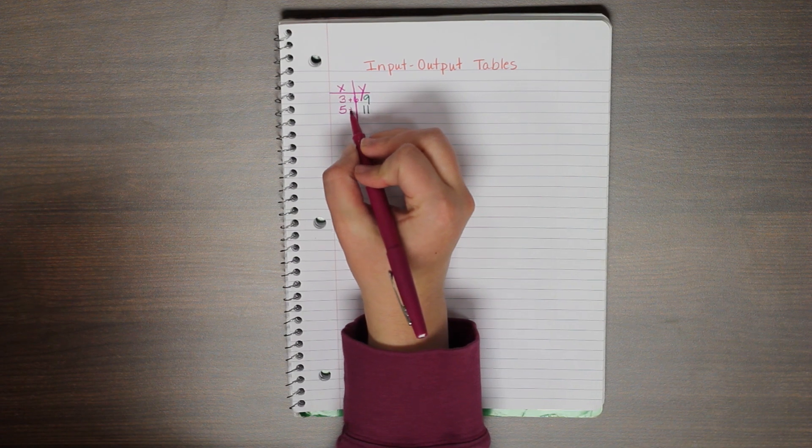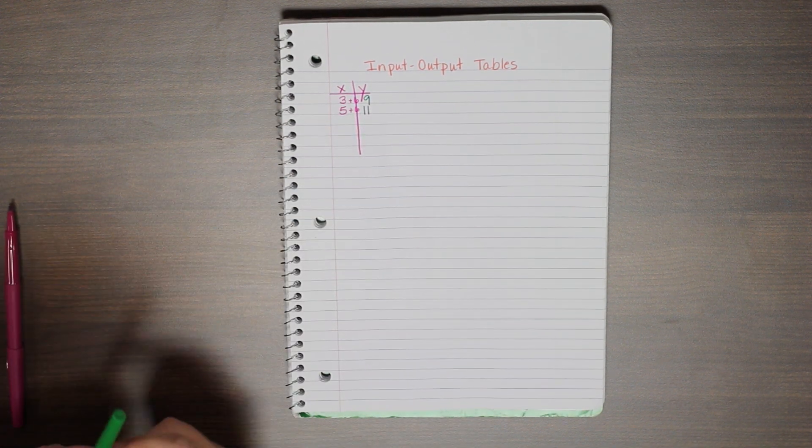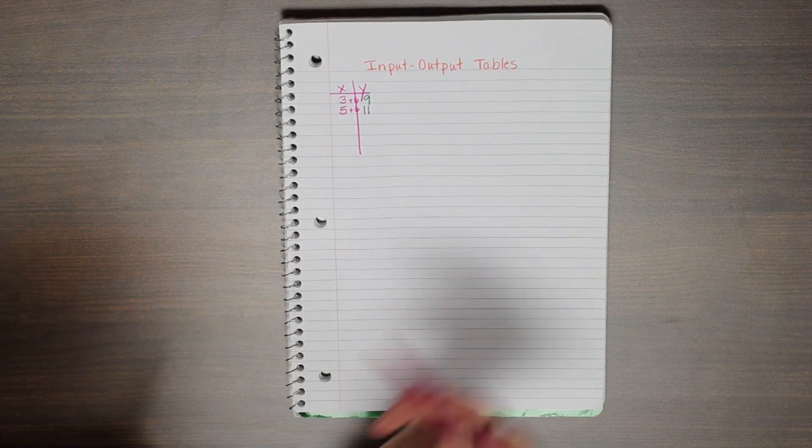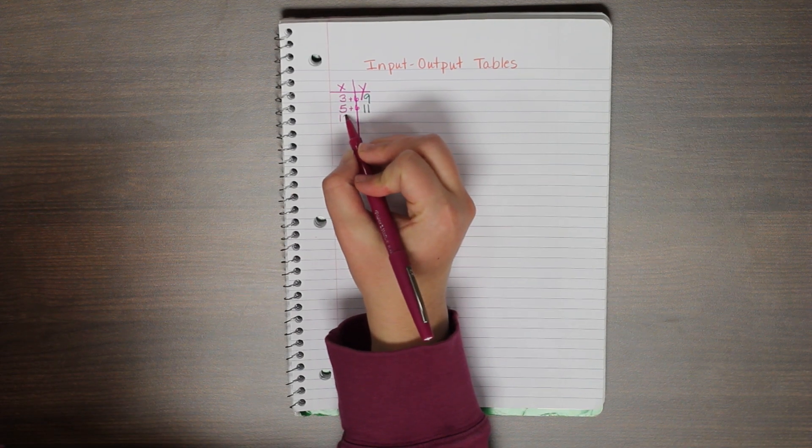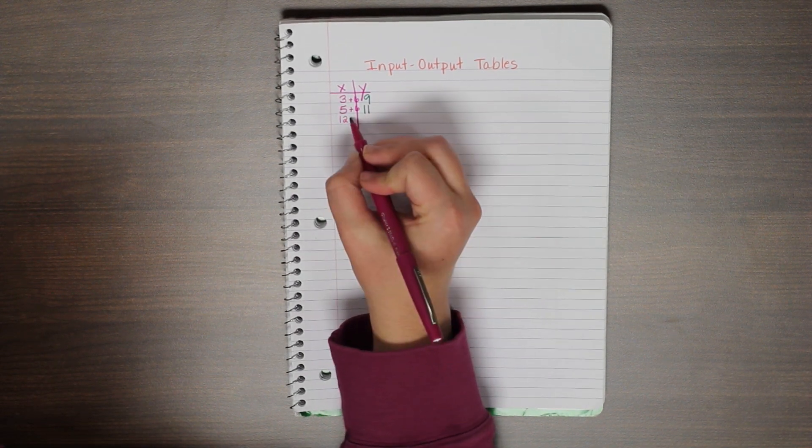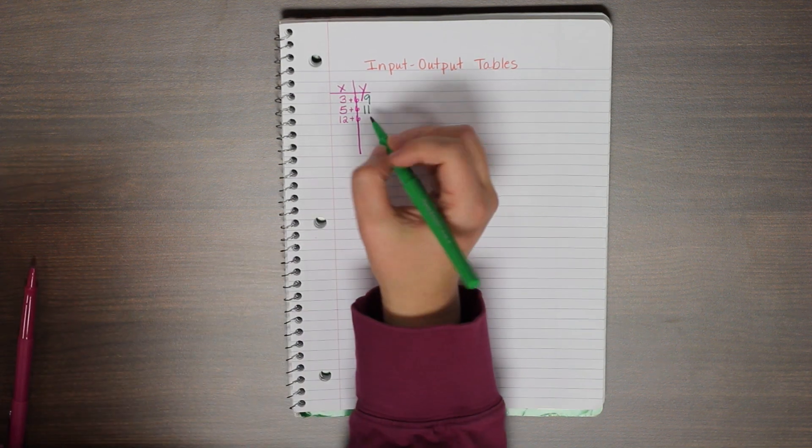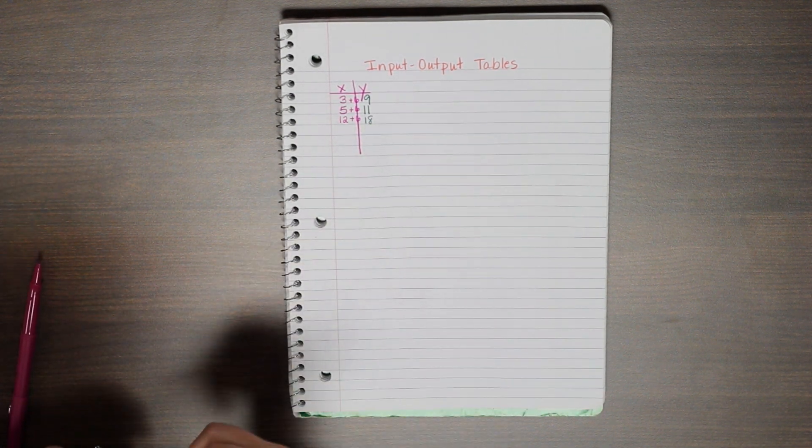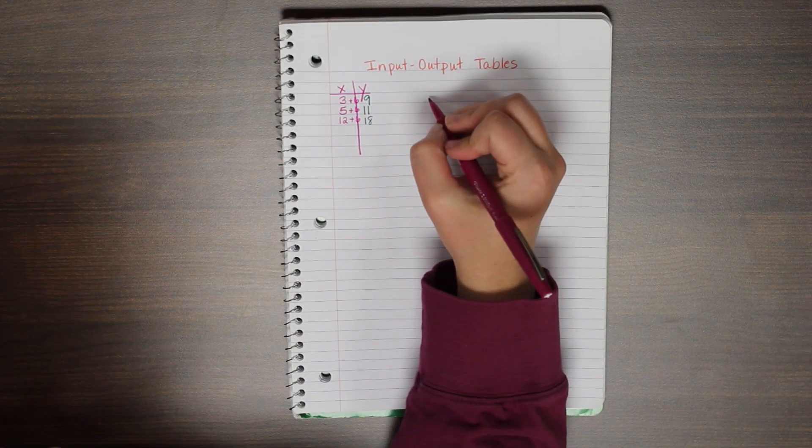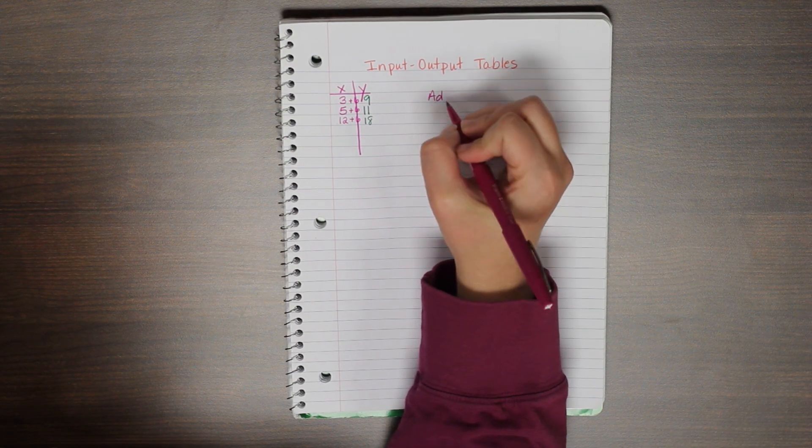I'm adding 6 to my x value to equal my y value. So 5 plus 6 is 11, and if I looked at another value of x, such as 12, well, 12 plus 6 is 18. This is what we call an additive relationship.